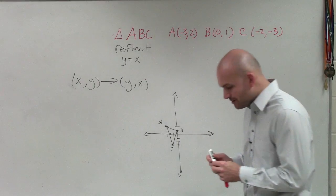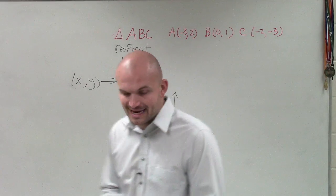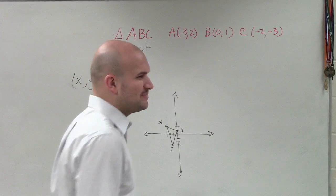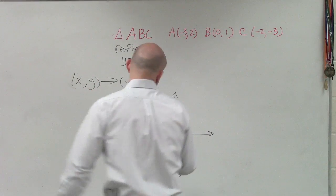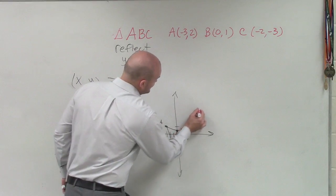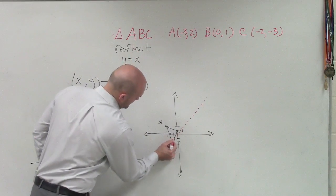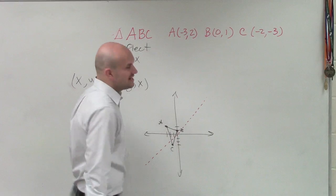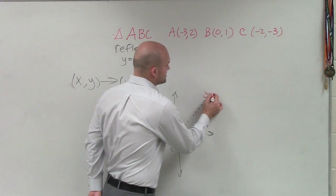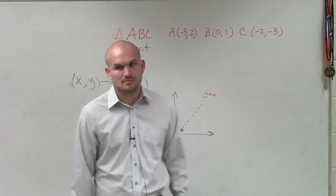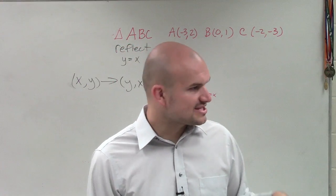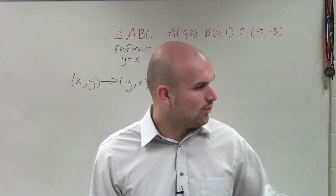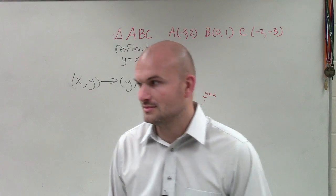Now, when we say reflect over the y equals x line, a lot of times when you're dealing with coordinate points, I wouldn't really recommend this. But what I want you guys to understand is we are reflecting it about this dotted line right here. That is what we call the y equals x line. It's a linear line with a slope of 1 over 1 and a y-intercept of 0.